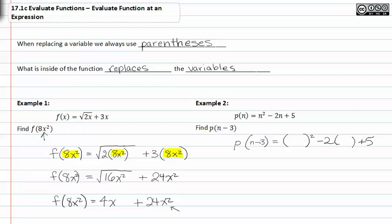From here I can substitute n minus three in where these parentheses were, and I'll be able to evaluate my function p(n-3).